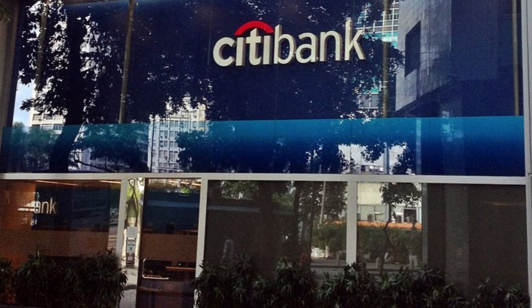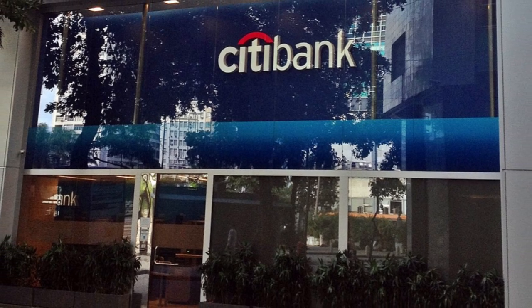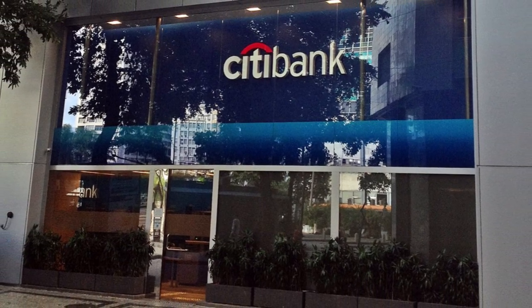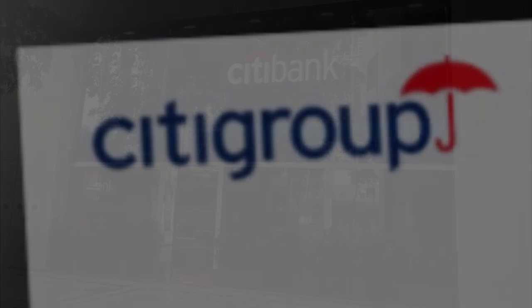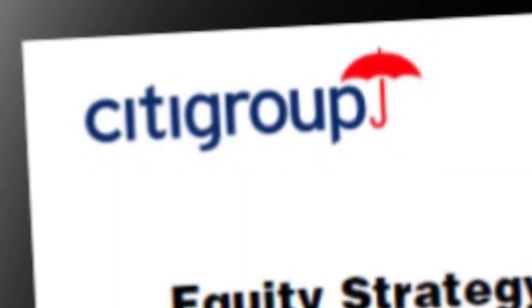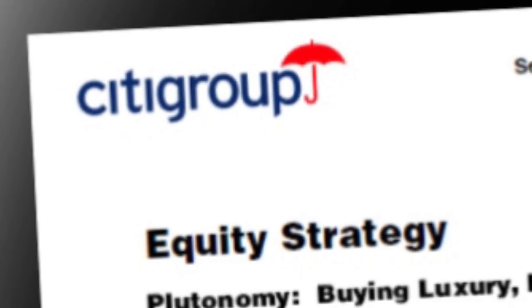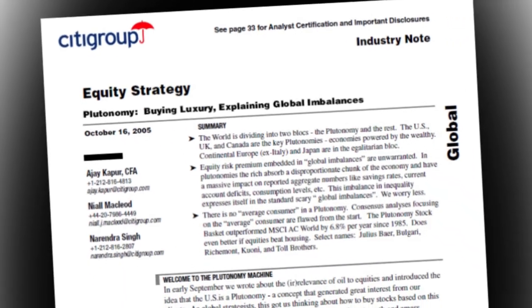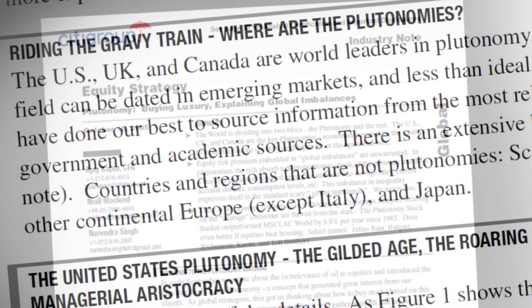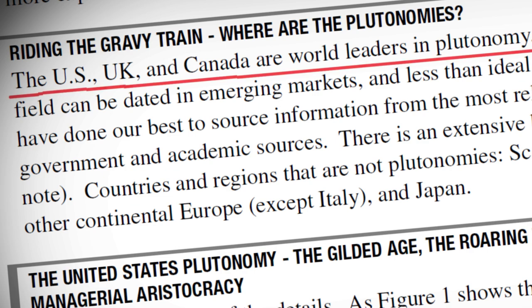Citigroup is the financial service corporation that owns Citibank and it is the third largest banking institution in the United States. Back in 2005 and 2006, Citigroup wrote three confidential memos to their major investors. And in these memos, Citigroup openly and quite gleefully confessed to some ugly truths. To quote from the memo, the US, UK and Canada are world leaders in plutonomy.